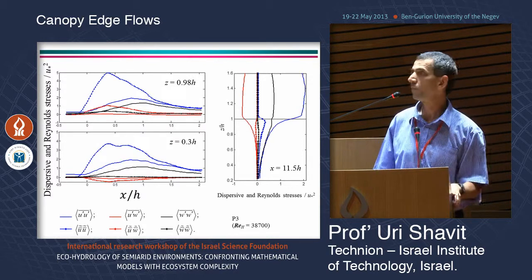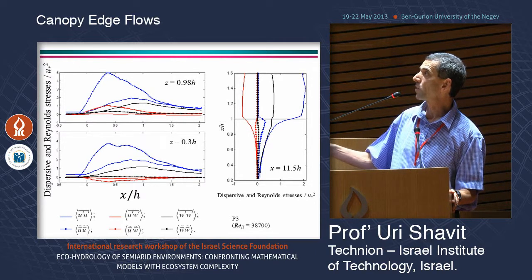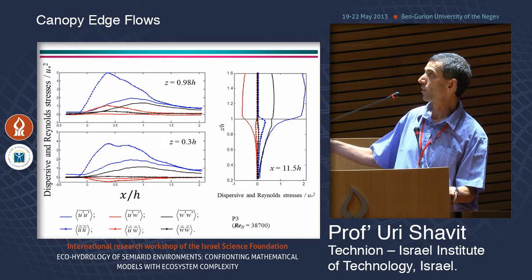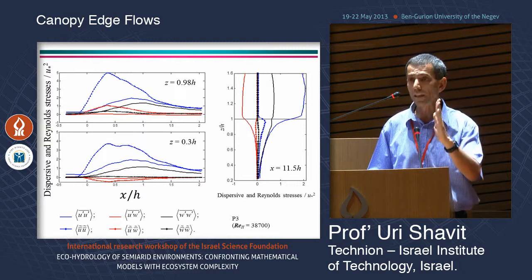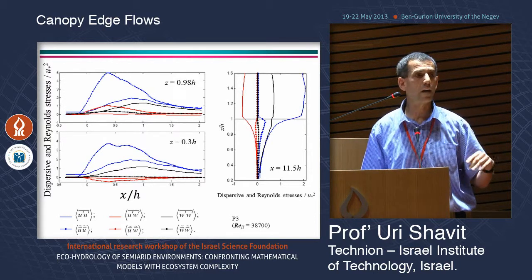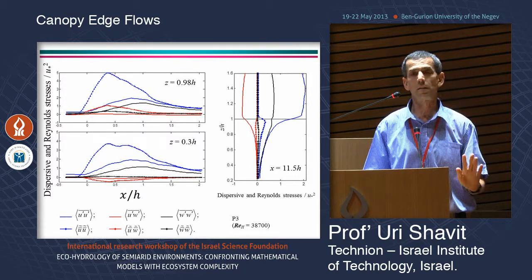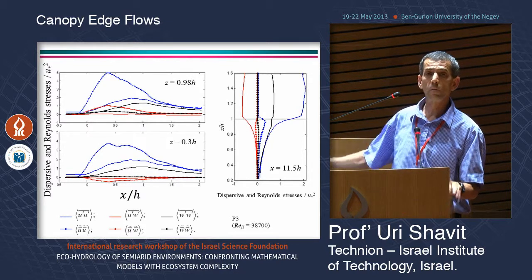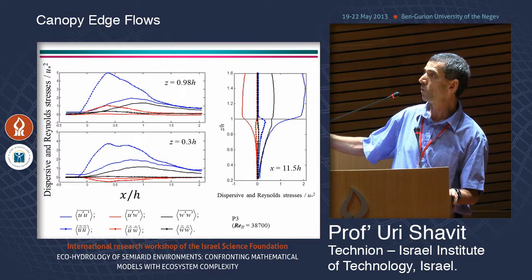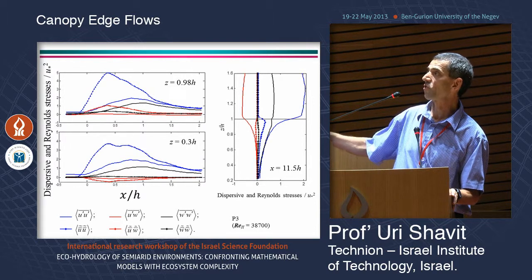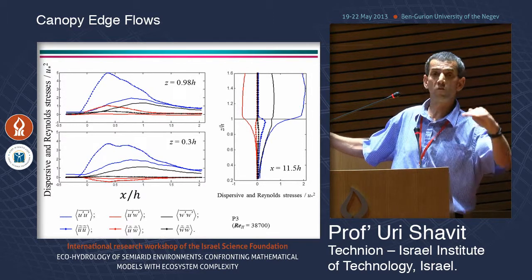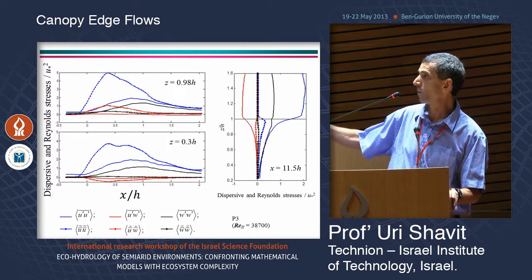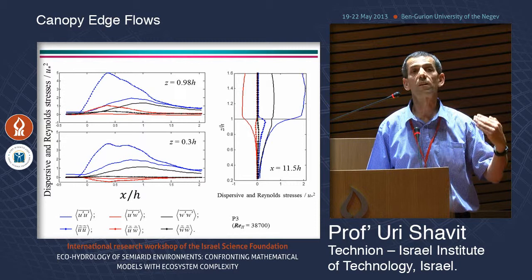The plots show dispersive and Reynolds stresses — six components. In the downstream, fully developed area, the dispersive stress values are indeed negligible, which is consistent with all existing models that ignore them. But in the entrance area, the U-tilde U-tilde component is very large — larger than everything else — at the top of the canopy and at about 0.3 of the canopy height. If you ignore it in the entrance region, you will definitely make a mistake.